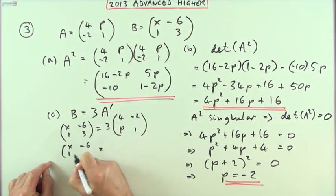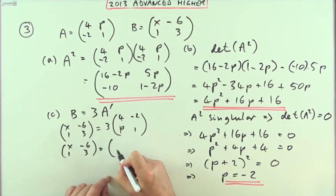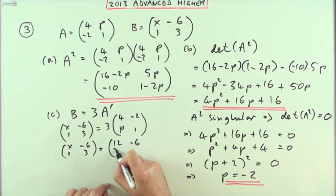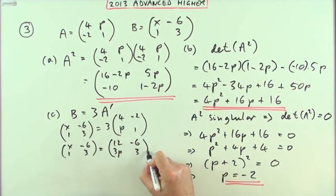So x negative 6, 1, 3 should become 3 times 4 or 12, 3 times negative 2 or negative 6, 3 times p is 3p, 3 times 1 or 3.